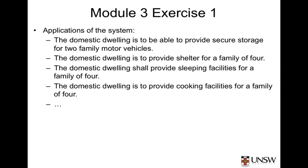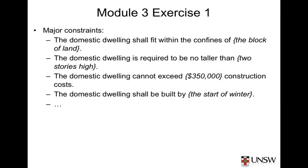It's likely that a domestic dwelling is also required to provide cooking facilities. In this example, the user requires facilities for a family of four, and of course there will be many more such statements. As well as the potential applications of the system, the operational concept will also contain the major constraints that could be applicable to the system — in our case, to the domestic dwelling.